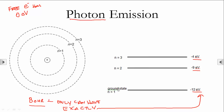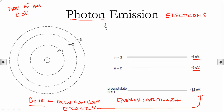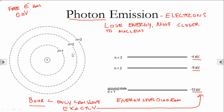When you see an energy level diagram, this is what I mean. In photon emission, electrons lose energy and move closer to the nucleus. They fall from n equals 3 to n equals 2 to n equals 1. When they do that, a photon is emitted.